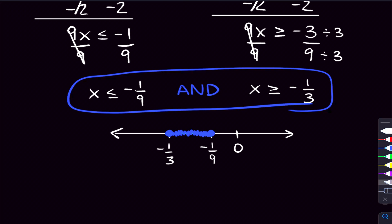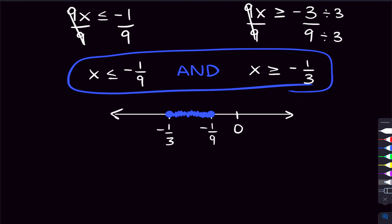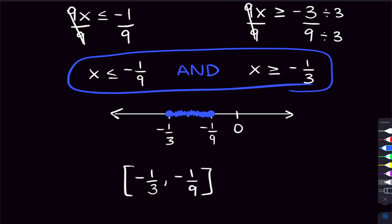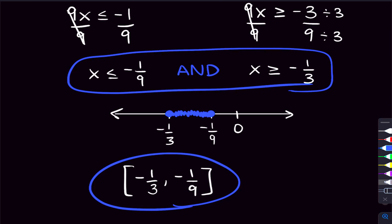For interval notation, our shading goes from negative 1 third to negative 1 over 9. We're not going to use parentheses now since we are including the endpoints. When we include the endpoints, we use brackets. That's our answer in interval notation.